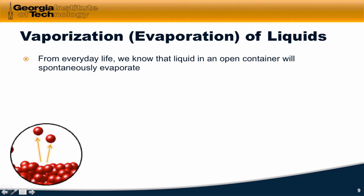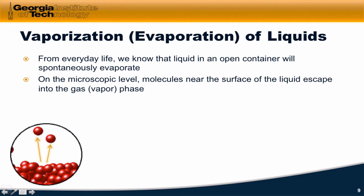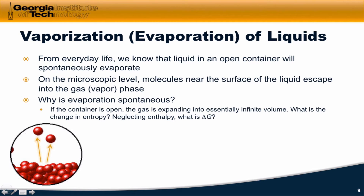Now let's think about everyday life and the idea that if we leave, for example, a glass of water out on a table in an open container, the water will spontaneously evaporate from the container and will eventually all turn to gas. On the microscopic level, molecules near the surface of the liquid are escaping into the gas phase. It's worth asking why this process is spontaneous. We know from a thermodynamic perspective that it must have delta G less than zero — evaporation must somehow have delta G less than zero.